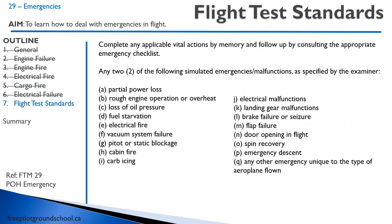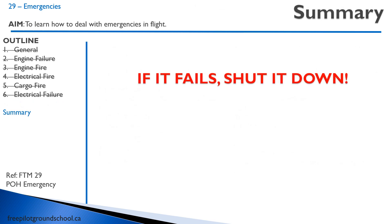On your flight test, you'll be expected to deal with two simulated emergencies. The examiner can give you any emergency from the pilot operating handbook or ones they come up with themselves — cabin fire, carb icing, and so on. You'll be expected to perform the vital actions from memory, then follow up by consulting the appropriate checklist. Remember your FEDC: fly the aircraft first, then do your emergency checklist, divert to where you need to go, then communicate with air traffic control. In summary: if it fails, shut it down. Thanks for joining me — I hope you never have to use this material, but if you do, hopefully it sticks.